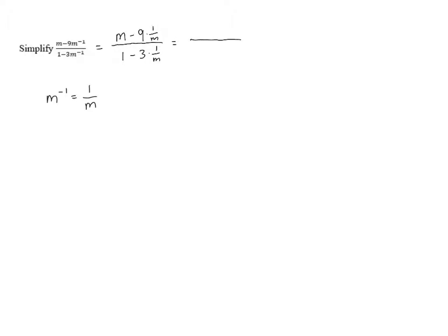And then I'm actually going to do those multiplications. 9 times 1 over m is 9 over m. And 3 times 1 over m is 3 over m. So I can rewrite this a little bit more simply with fractions.